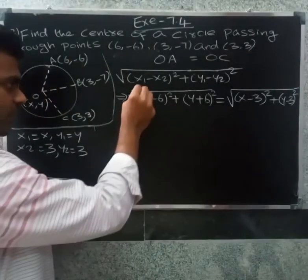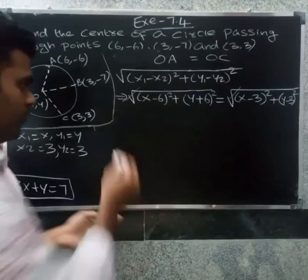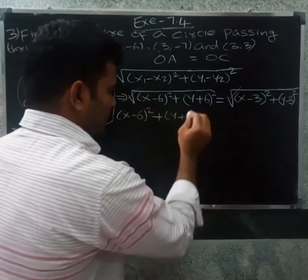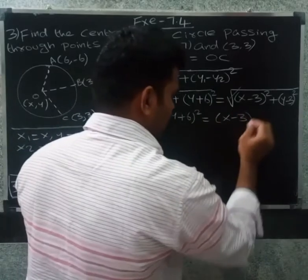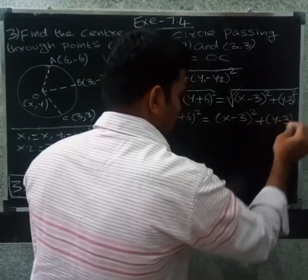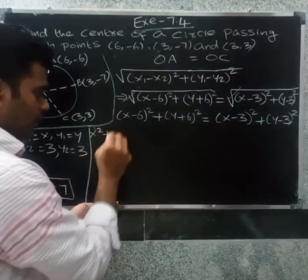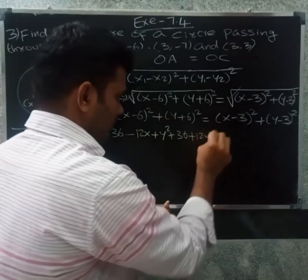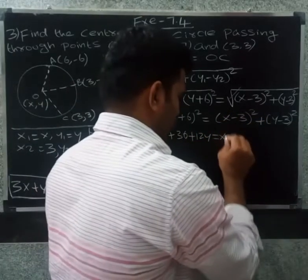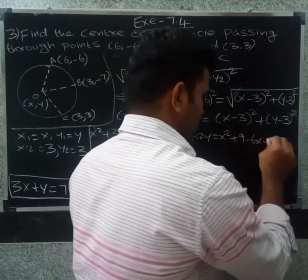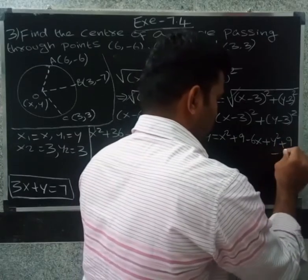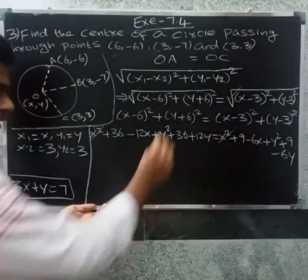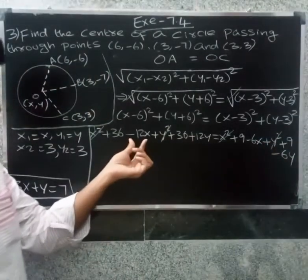We can remove the square roots and equalize directly. So (x minus 6) whole square plus (y plus 6) whole square equals (x minus 3) whole square plus (y minus 3) whole square. Expanding: x square minus 12x plus 36 plus y square plus 12y plus 36 equals x square minus 6x plus 9 plus y square minus 6y plus 9. The x square and y square terms cancel.